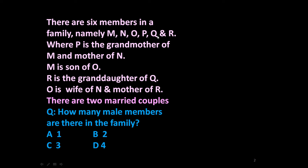P is the grandmother of M and mother of N. M is a son of O. R is the granddaughter of Q. O is wife of N and mother of R. There are two married couples. The question is: how many male members are there in the family? Based on this information we have to answer this question.